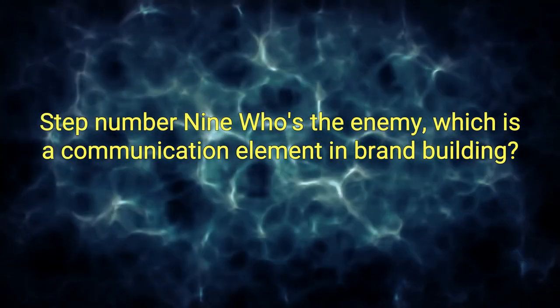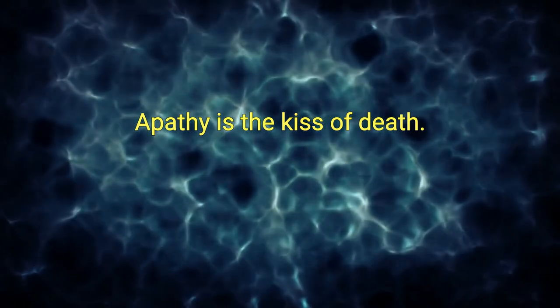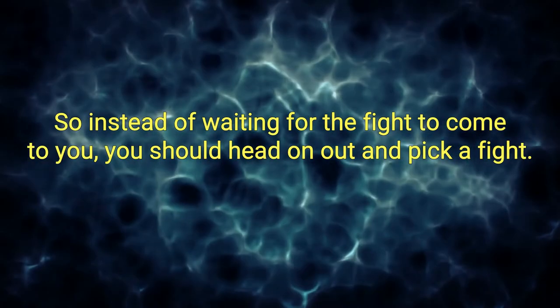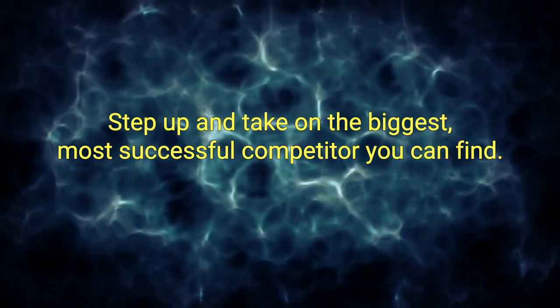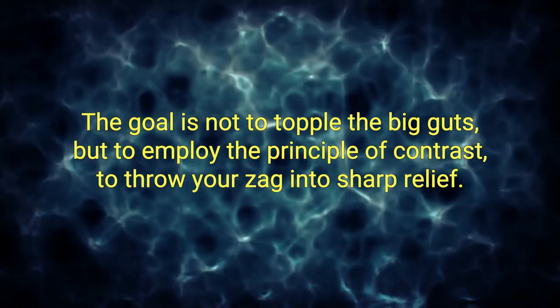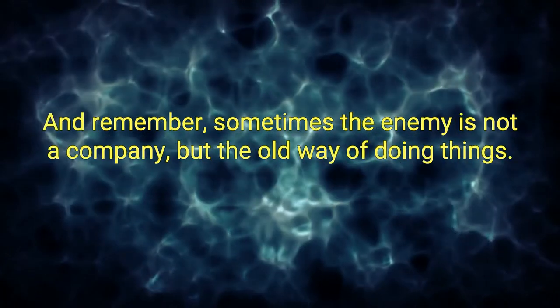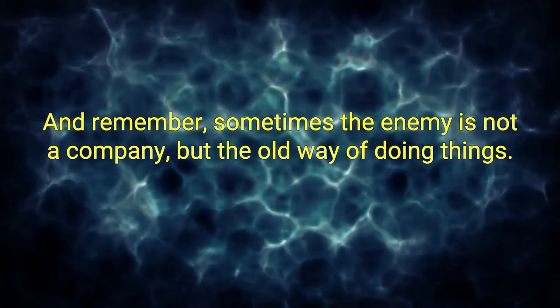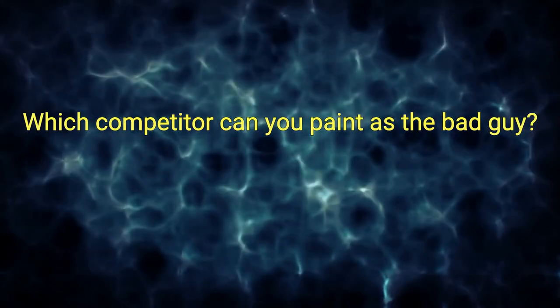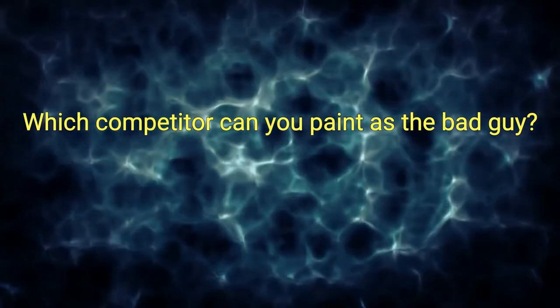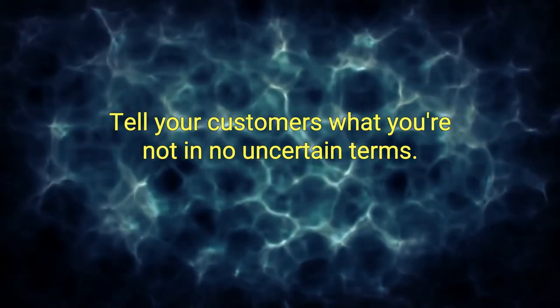Step number nine, who's the enemy, which is a communication element. In brand building, apathy is the kiss of death. So instead of waiting for the fight to come to you, you should head on out and pick a fight. Step up and take on the biggest, most successful competitor you can find. The goal is not to topple the big guys, but to employ the principle of contrast to throw your zag into sharp relief. And remember, sometimes the enemy is not a company, but the old way of doing things. Here's some questions to ask yourself: Which competitor can you paint as the bad guy? And here are some action steps to take: Tell your customers what you're not in no uncertain terms.